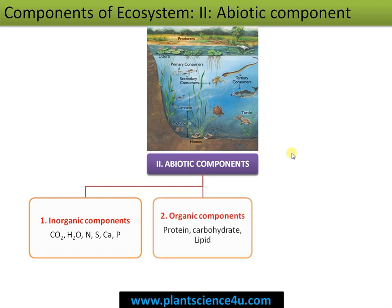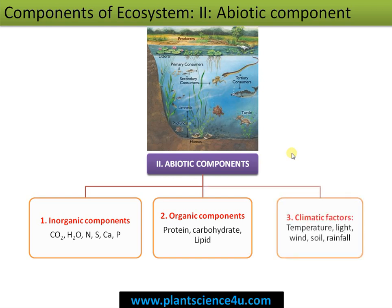Second are organic components — these nutrients are taken up by organisms and converted into biomolecules like proteins, carbohydrates, and lipids, which are all carbon-containing compounds. Finally, the climatic factors include temperature, light, wind, soil, and rainfall. In the case of an aquatic ecosystem, water is the most important physical factor, and dissolved oxygen and salinity are also important physical factors.